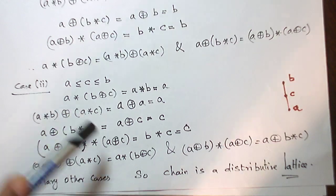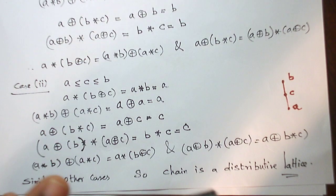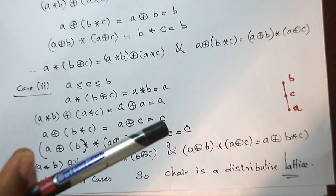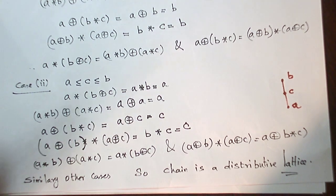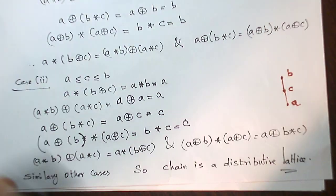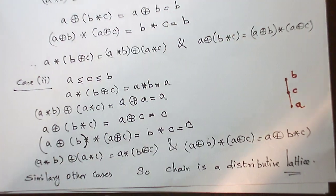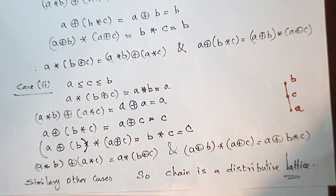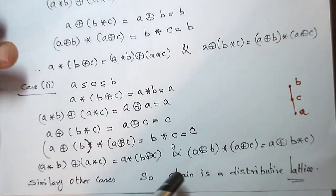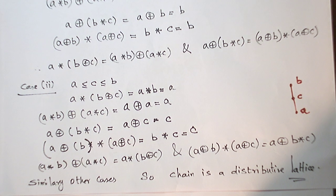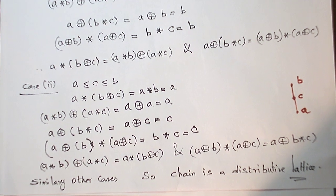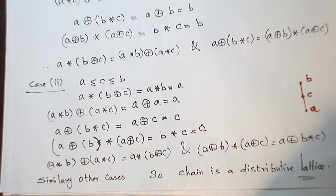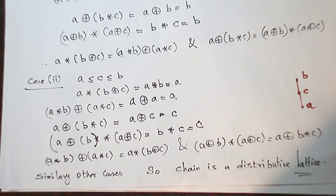Similarly, we can check the distributive laws by drawing the Hasse diagram — where ∧ gives the smaller and ∨ gives the larger of the two elements — and verify left side and right side of each distributive law for all remaining cases. We can thus conclude that every chain is a distributive lattice. With this, this problem is over; let us see another problem in the next video. Thank you.